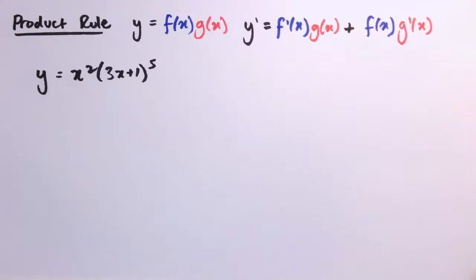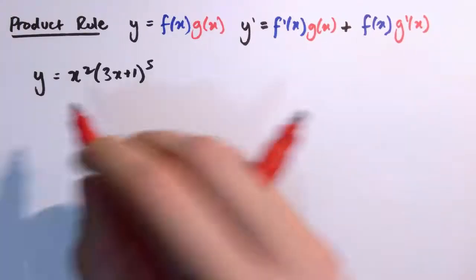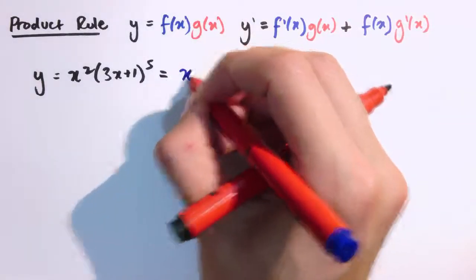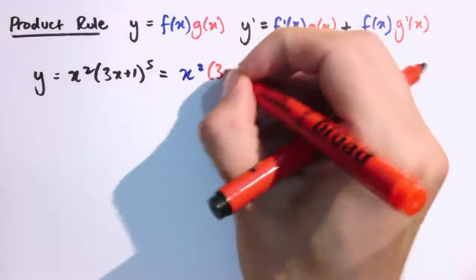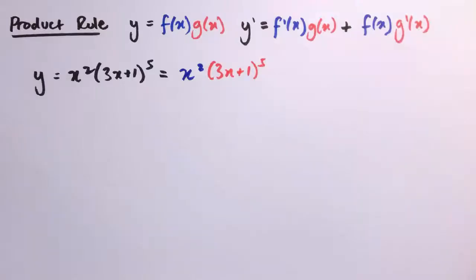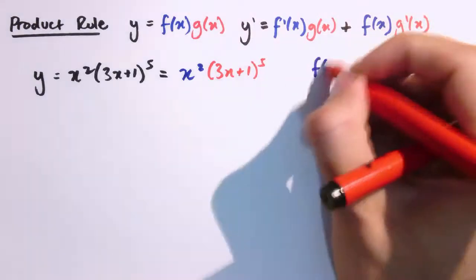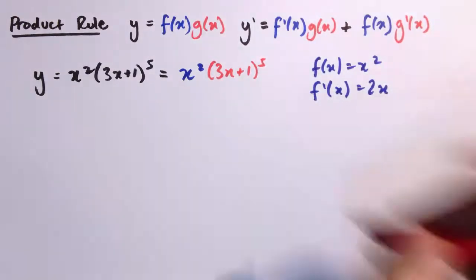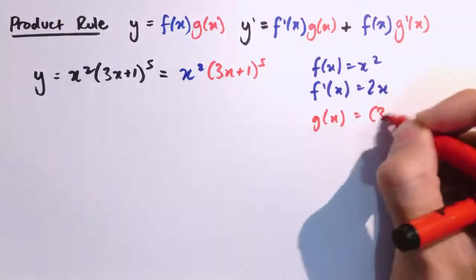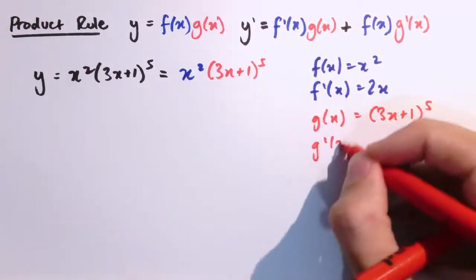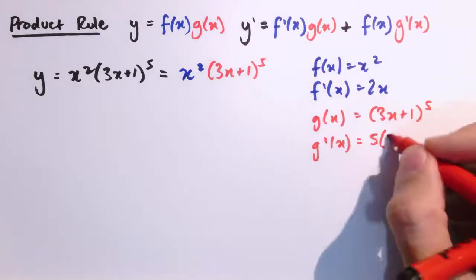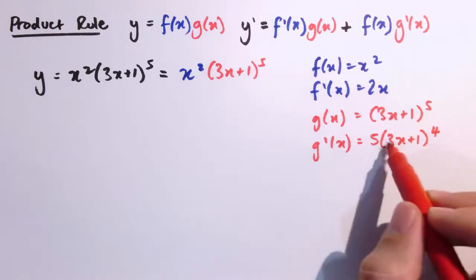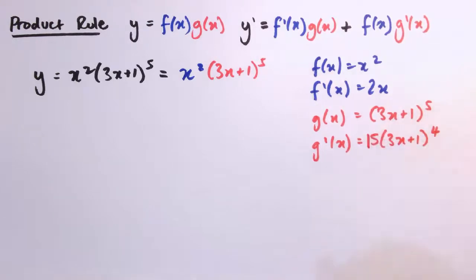To differentiate y equals x squared times (3x plus 1) to the 5, we notice it is in the form needed for the product rule — a product of two different functions. So f of x equals x squared, f dashed of x equals 2x, and g of x equals (3x plus 1) to the 5. Then g dashed of x is 5 times (3x plus 1) to the 4, and by the chain rule we multiply by the derivative of 3x plus 1, which is 3, so instead of 5 we actually have 15.